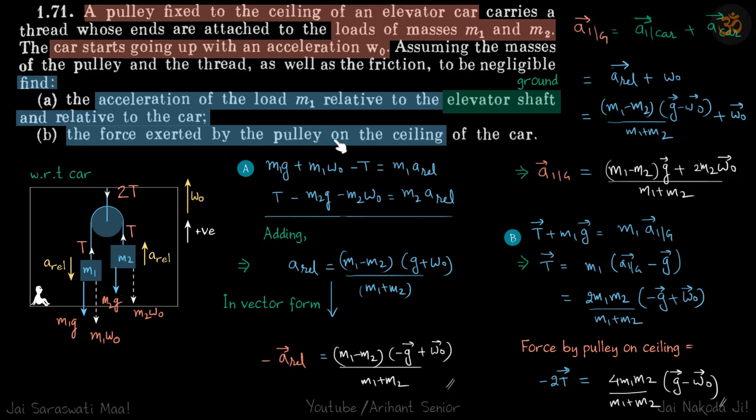Now force exerted by the pulley on the ceiling. If these tensions are T, so on M1, T is upwards. On this thread however, the thread is pulling the elevator down with the force 2T. And that's what he's asking: the force exerted by the pulley on the ceiling. So it is 2T downwards. So first let's find T.